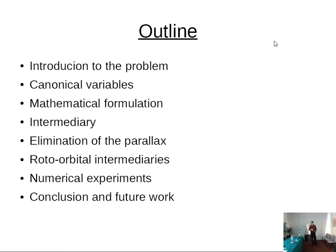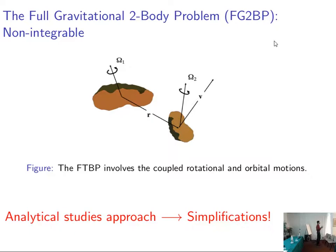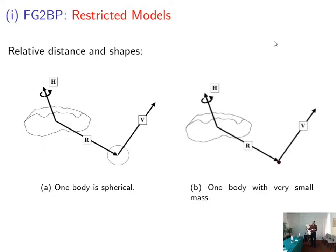We're dealing with the full two-body problem where we have both the orbital and the rotational motion of the system. But it's very known that this problem is unsolvable in terms of analytical solutions because we have many degrees of freedom. So a way to deal with this problem and try to find approximate solutions that are analytical is we need to consider some simplifications in the system.